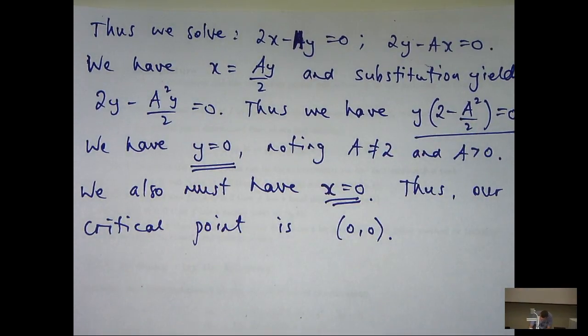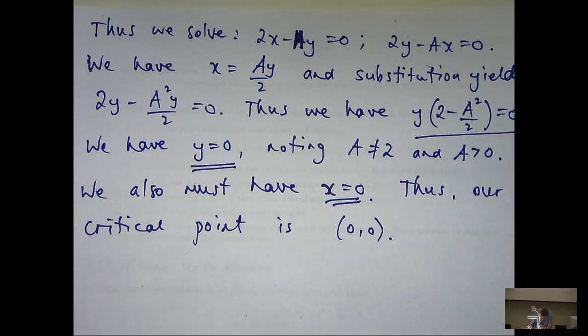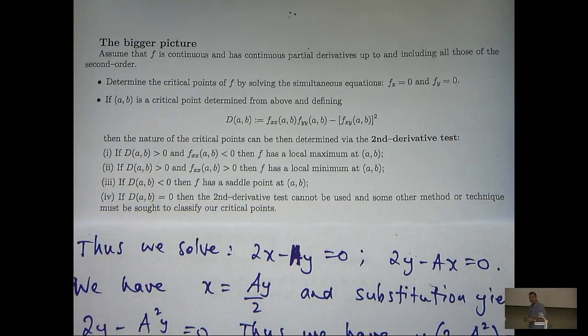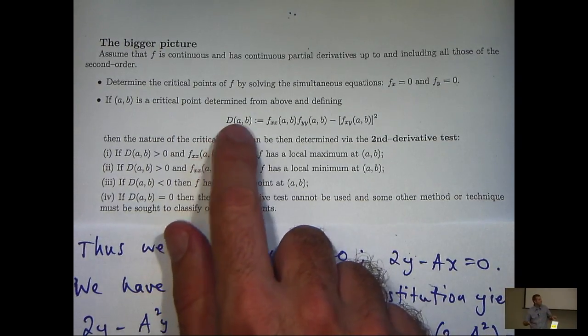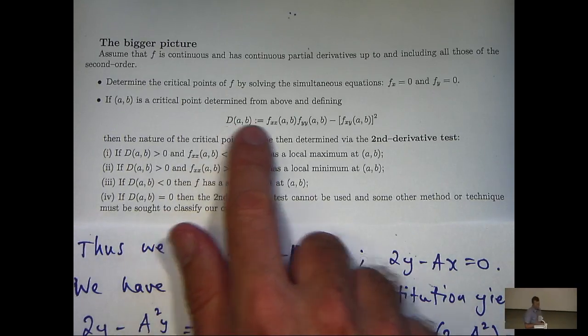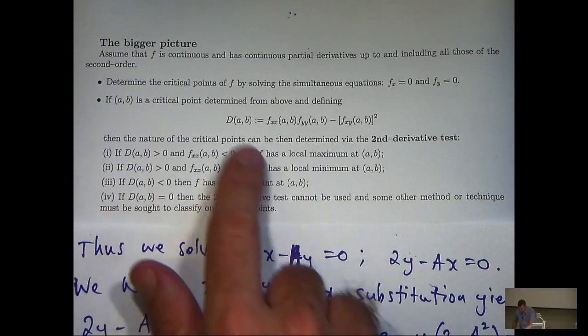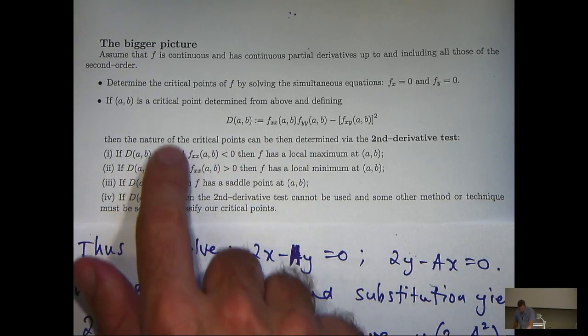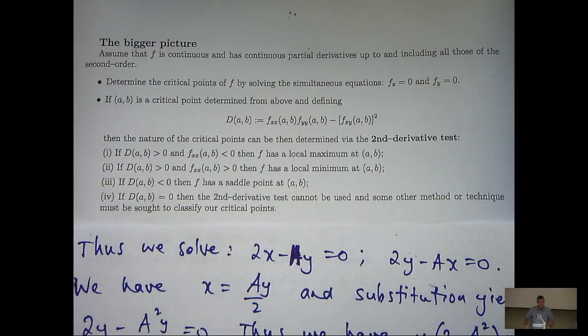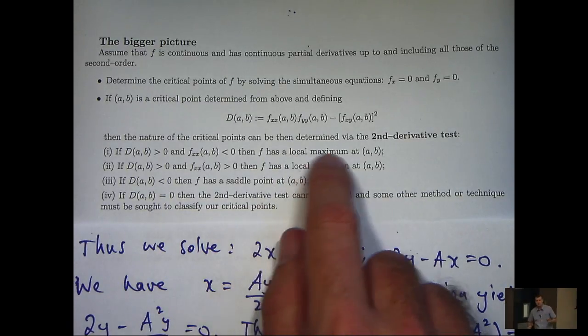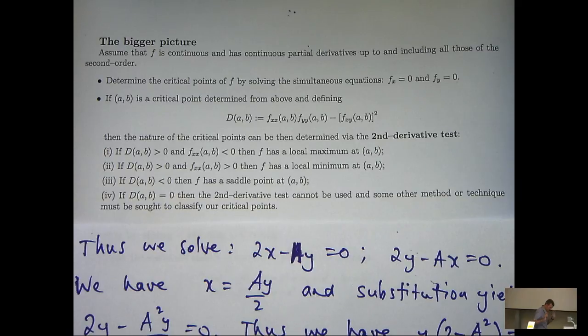Now, the next thing is to classify the critical point. To do that we're going to use an idea called the second derivative test. It's quite long but essentially we introduce this D definition here involving second order partial derivatives. And then we look down, calculate these derivatives and see which of these cases occur. And then we can make some conclusions about whether f has a local max, a local min or a saddle point. Now, a saddle point is just a generalization of a point of inflection.